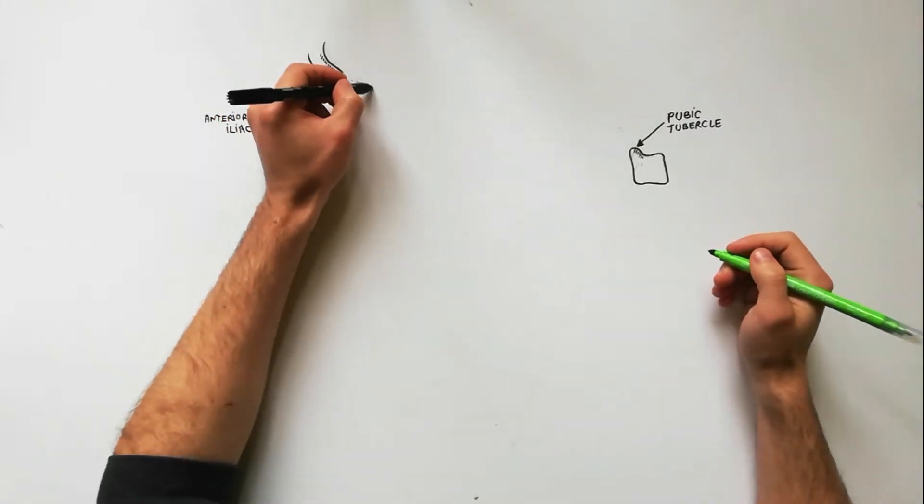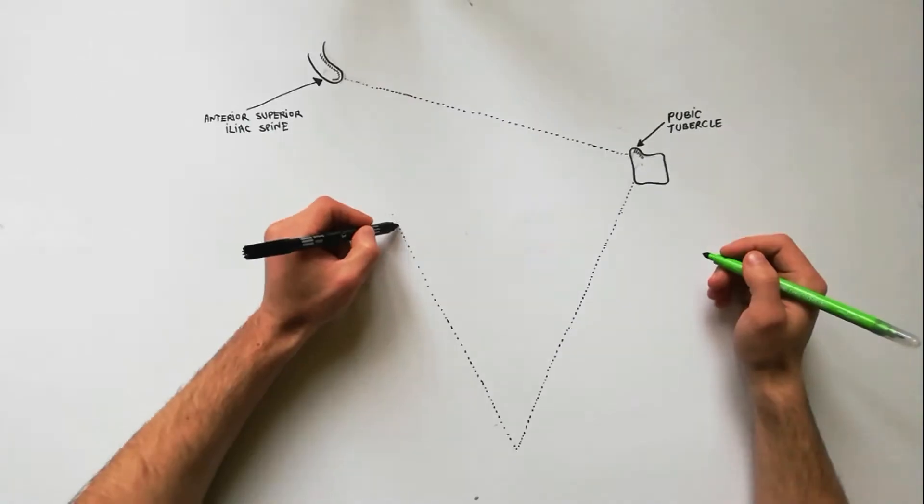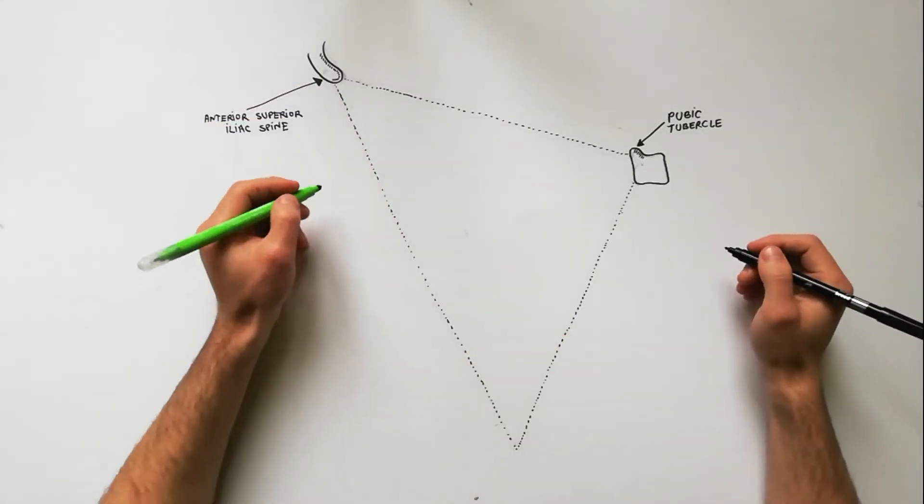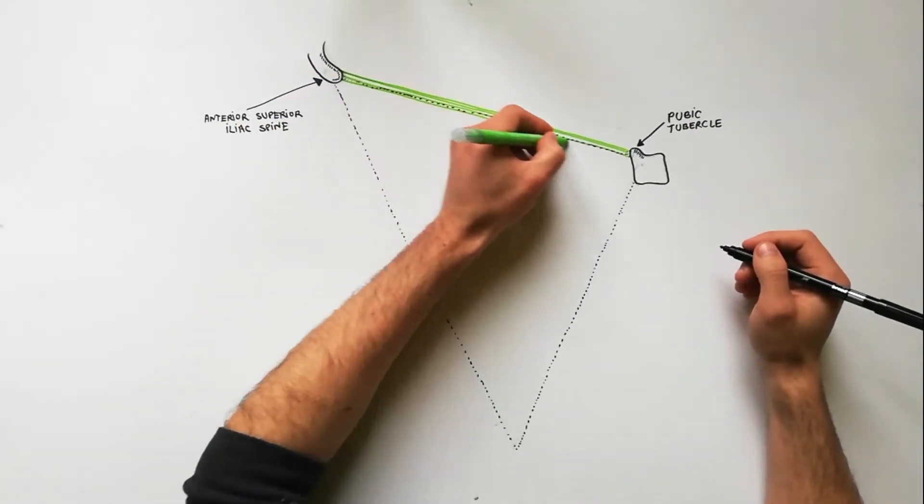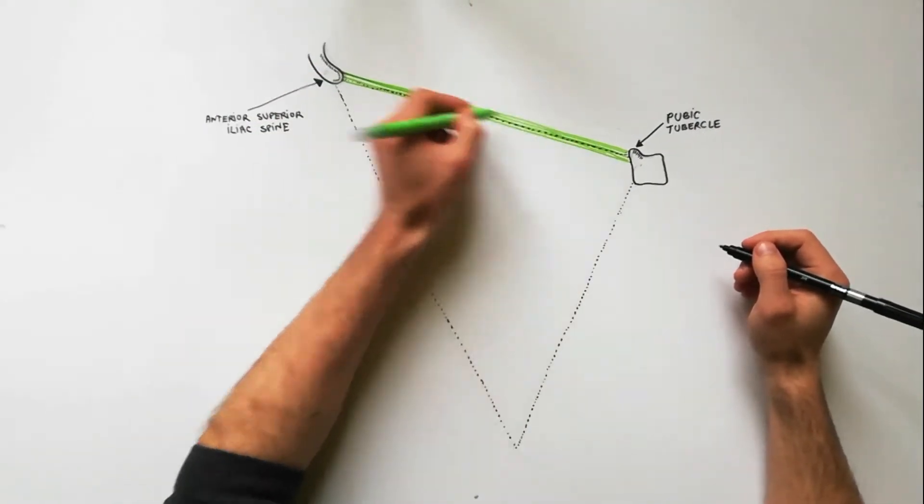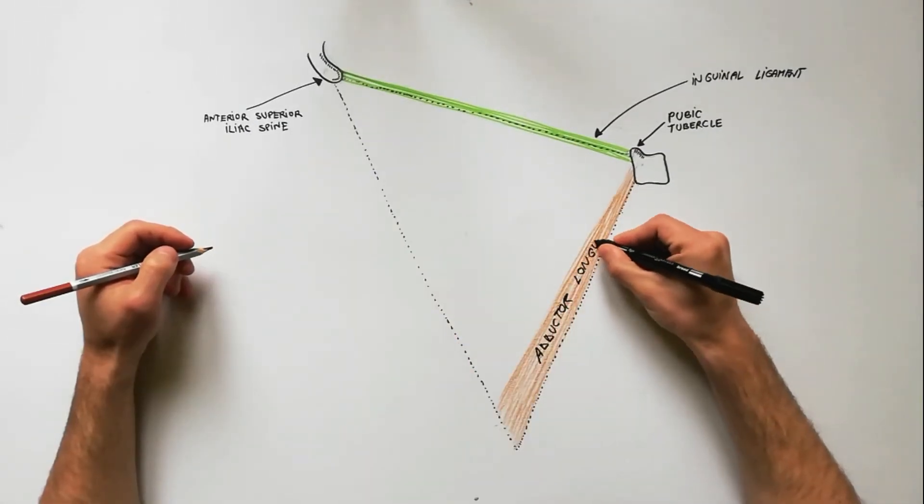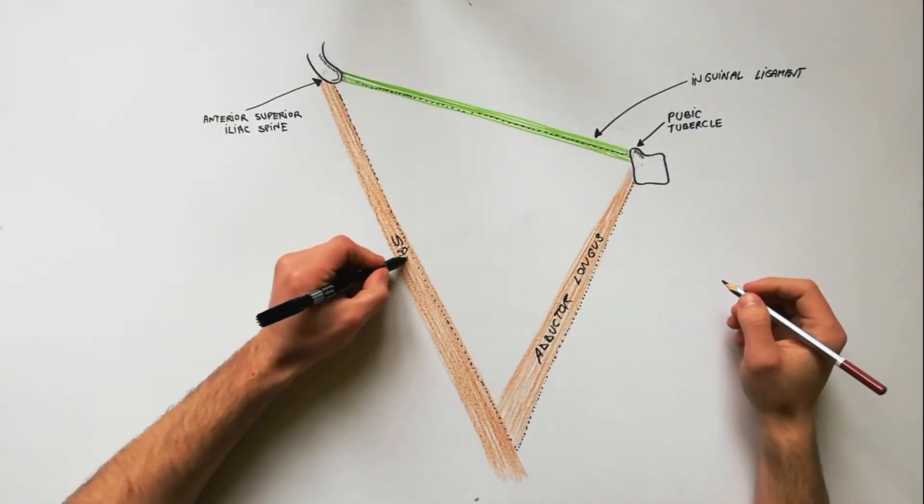The femoral triangle or Scarpa's triangle is an anatomical region of the upper third of the thigh. The femoral triangle is bounded superiorly by the inguinal ligament, medially by the medial border of the adductor longus muscle, and laterally by the medial border of the sartorius muscle.